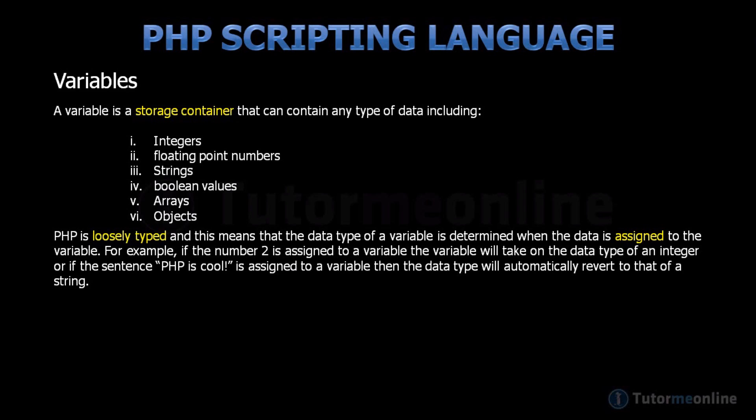For example, if the number 2 is assigned to a variable, the variable will take on the data type of an integer. Or, if the sentence 'PHP is cool' is assigned to a variable, then the data type will automatically revert to that of a string.